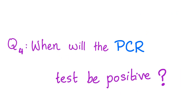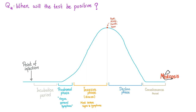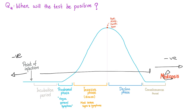When will the PCR test be positive? We can look at this graph. Before the point of infection, the PCR test will come back negative. After you recover, it's also going to come back negative. But everything in between is probably going to come back positive, assuming the test is 100% accurate.